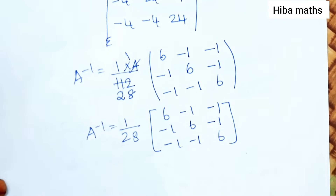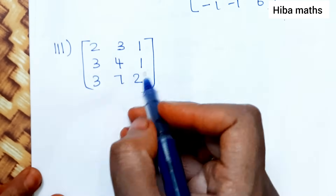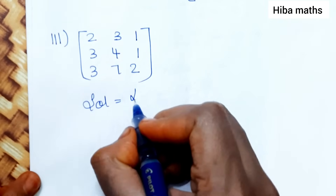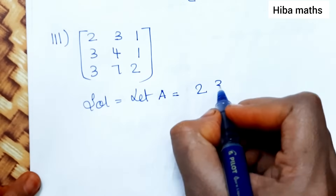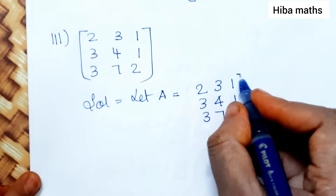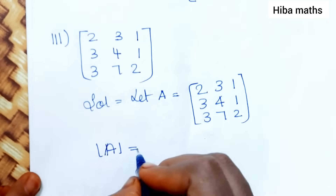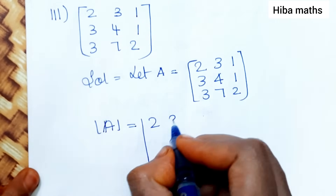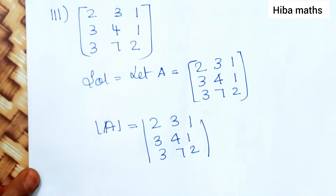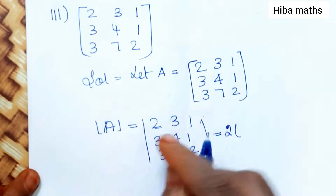Third subdivision: matrix [2,3,1; 3,4,1; 3,7,2]. Solution: let A equal to [2,3,1; 3,4,1; 3,7,2]. Now find the modulus of A. Expand along first row: 2 into the 2 by 2 submatrix from rows 2 and 3, columns 2 and 3.